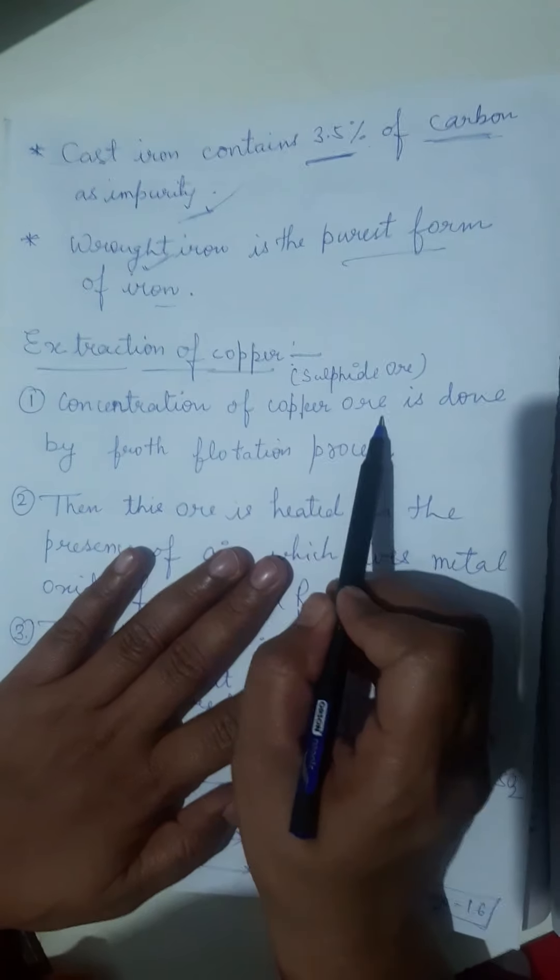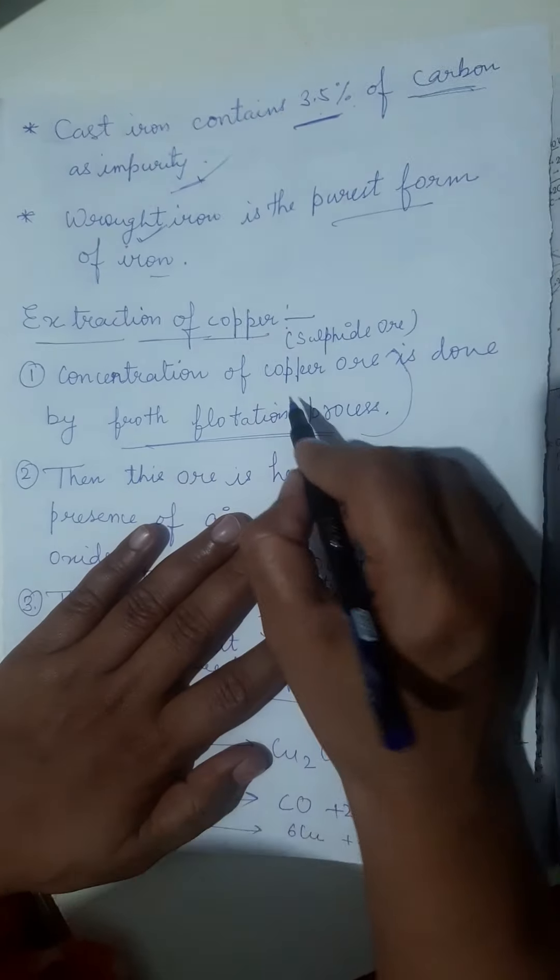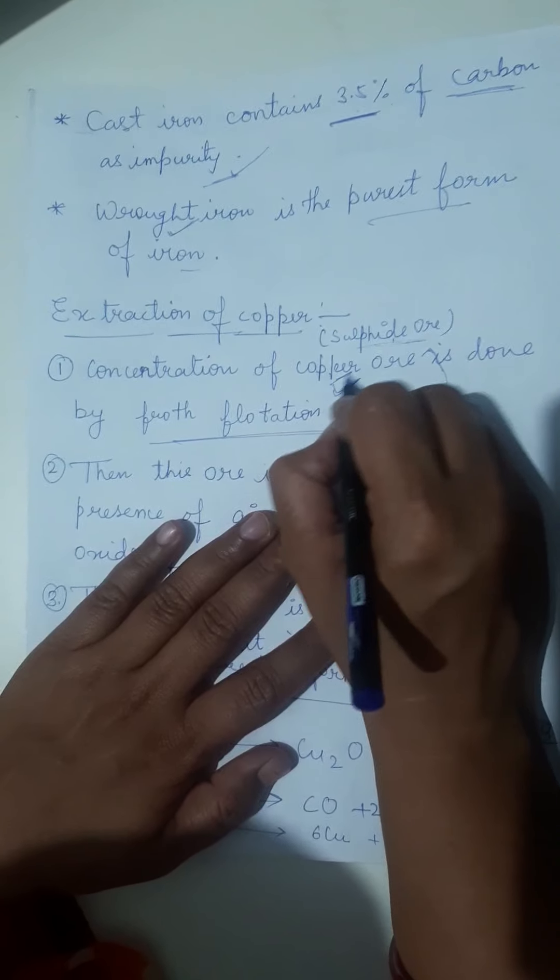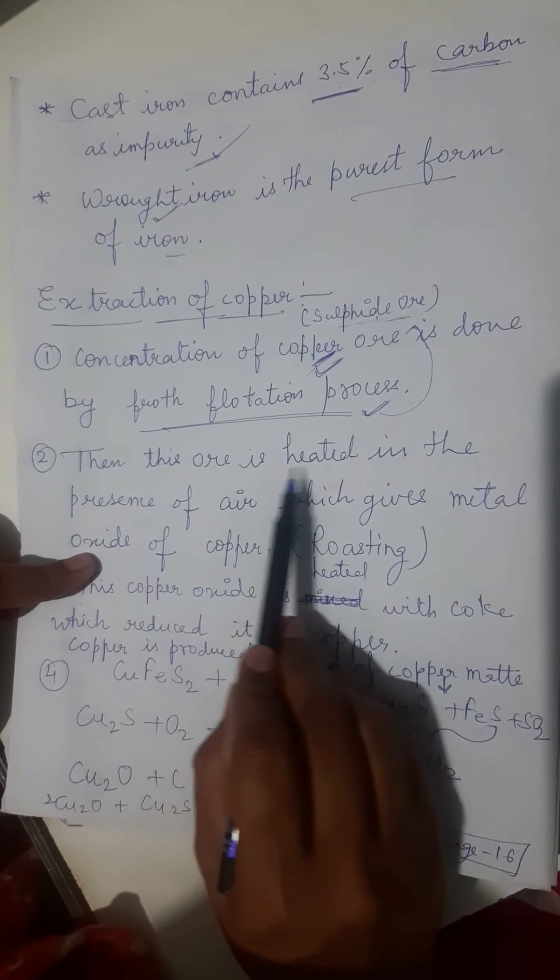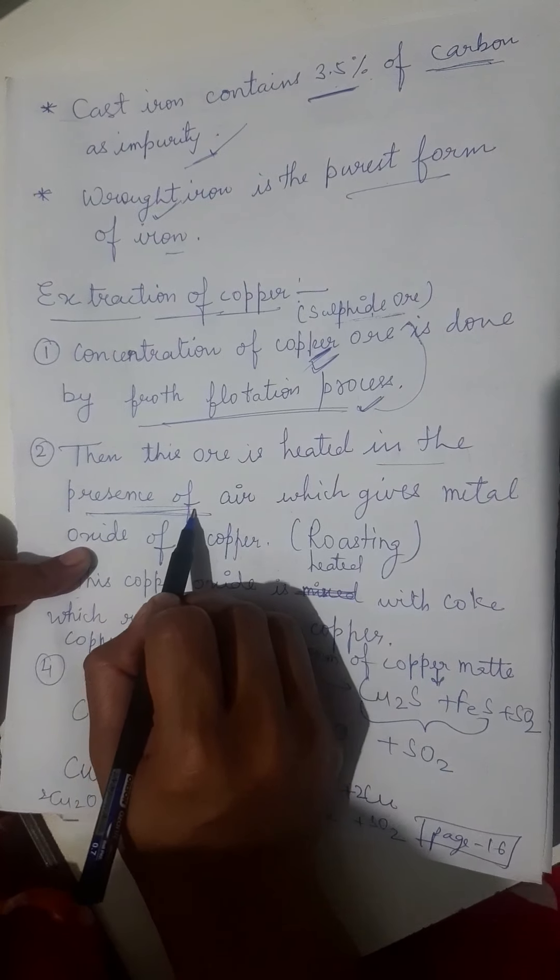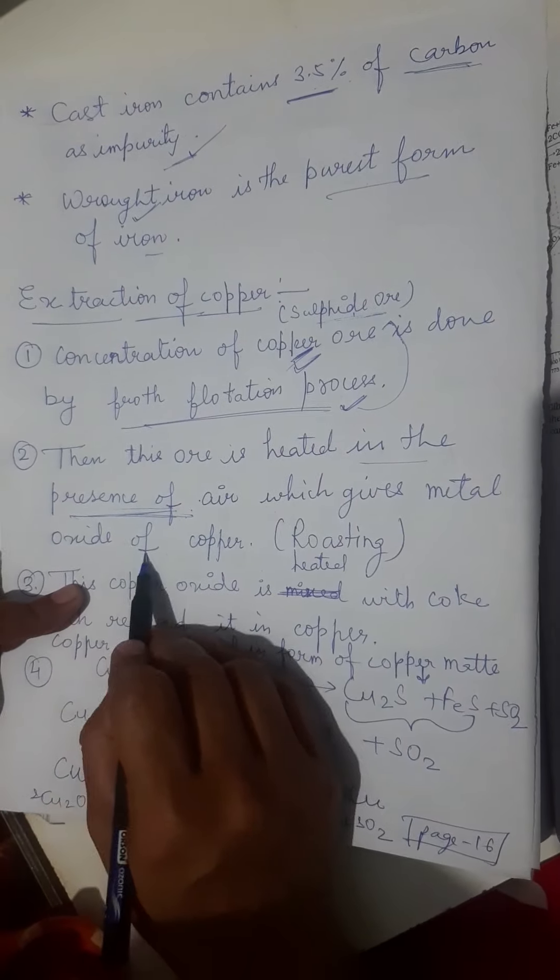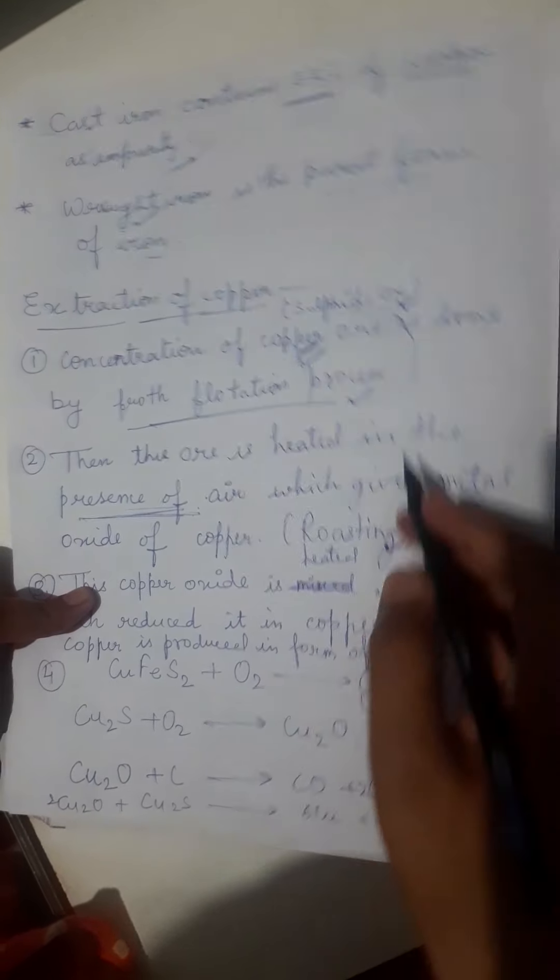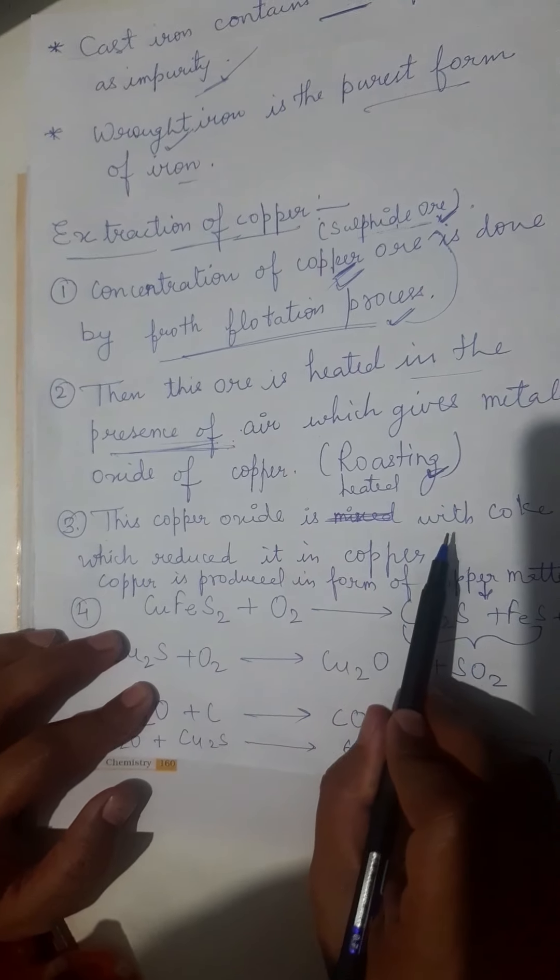Concentration of copper ore is done by froth flotation process. This froth flotation process is related to sulphide ore. It means copper has sulphide ores from which we will get copper. Second point: then this ore is heated in the presence of air. Heating in the presence of air means this is roasting. Sulphide ore undergoes roasting, which gives metal oxide of copper. We already cleared this in previous videos.